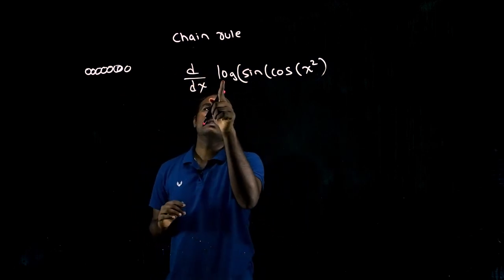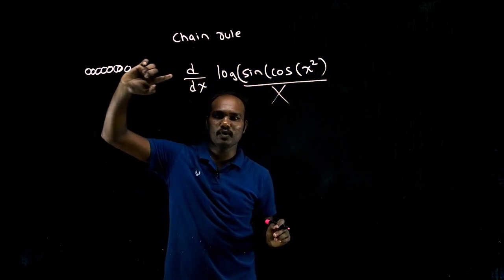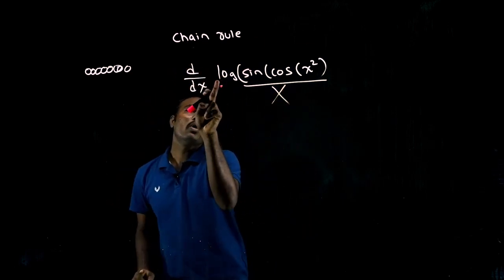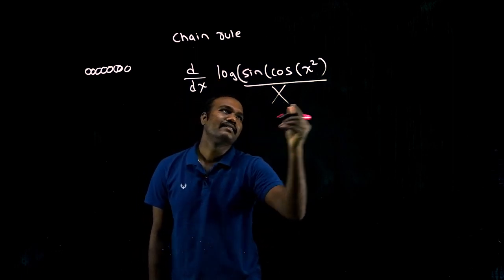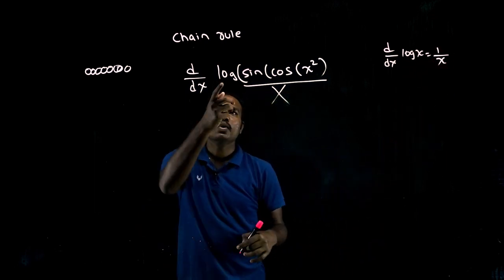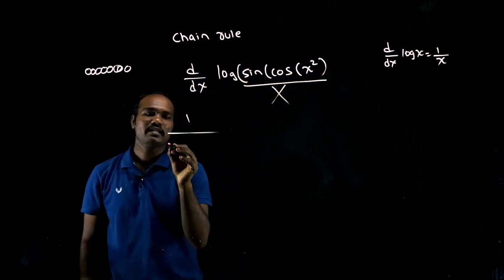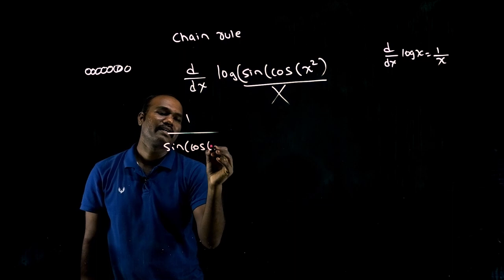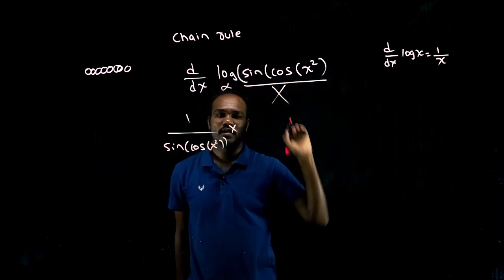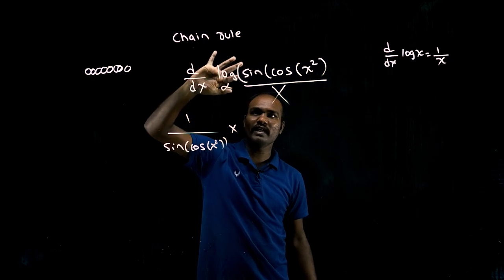If I come outside, I can see log. Inside, whatever is there — you don't care about it, just think of it as x. So log x differentiation is 1/x. The x here means the whole inside thing: sine of cos of x squared. Multiply. This is over. Now I go to sine.